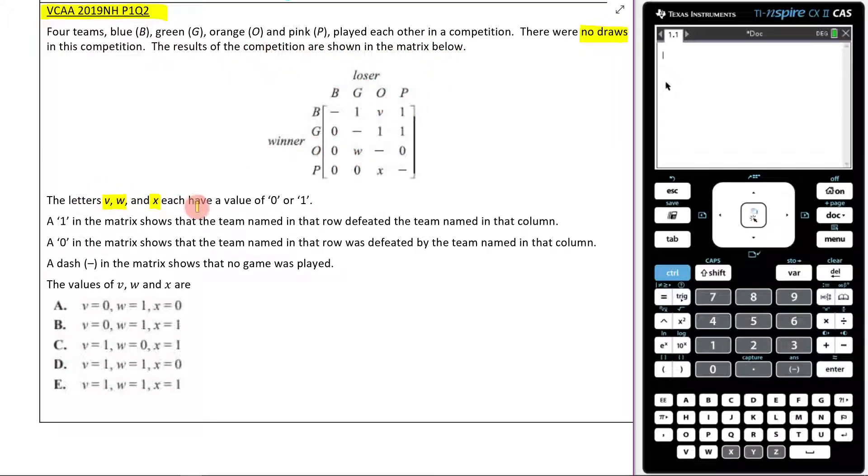The letters V, W and X have a value of 0 or 1. A 1 in the matrix shows that the team named in the row defeated the team named in the column. And a 0 in the matrix shows that the team named in the row was defeated by the team named in the column.